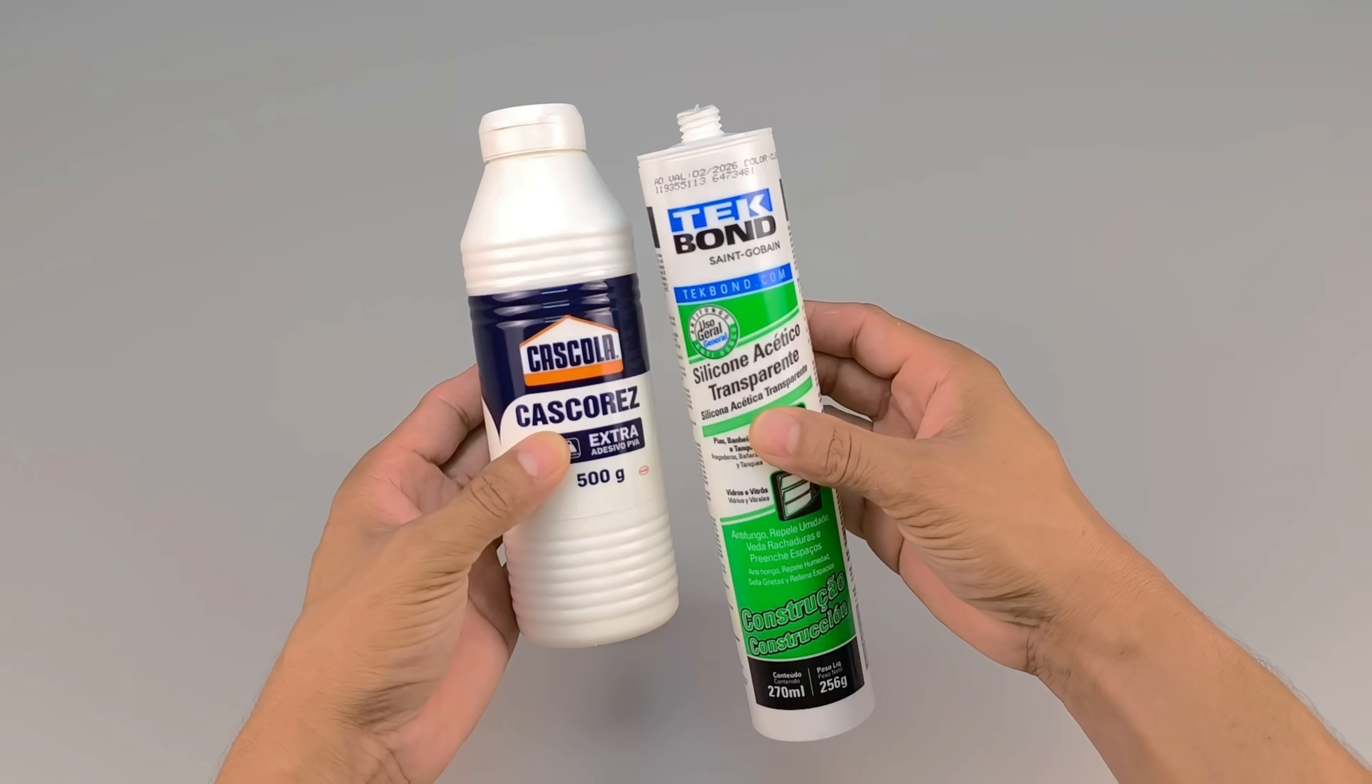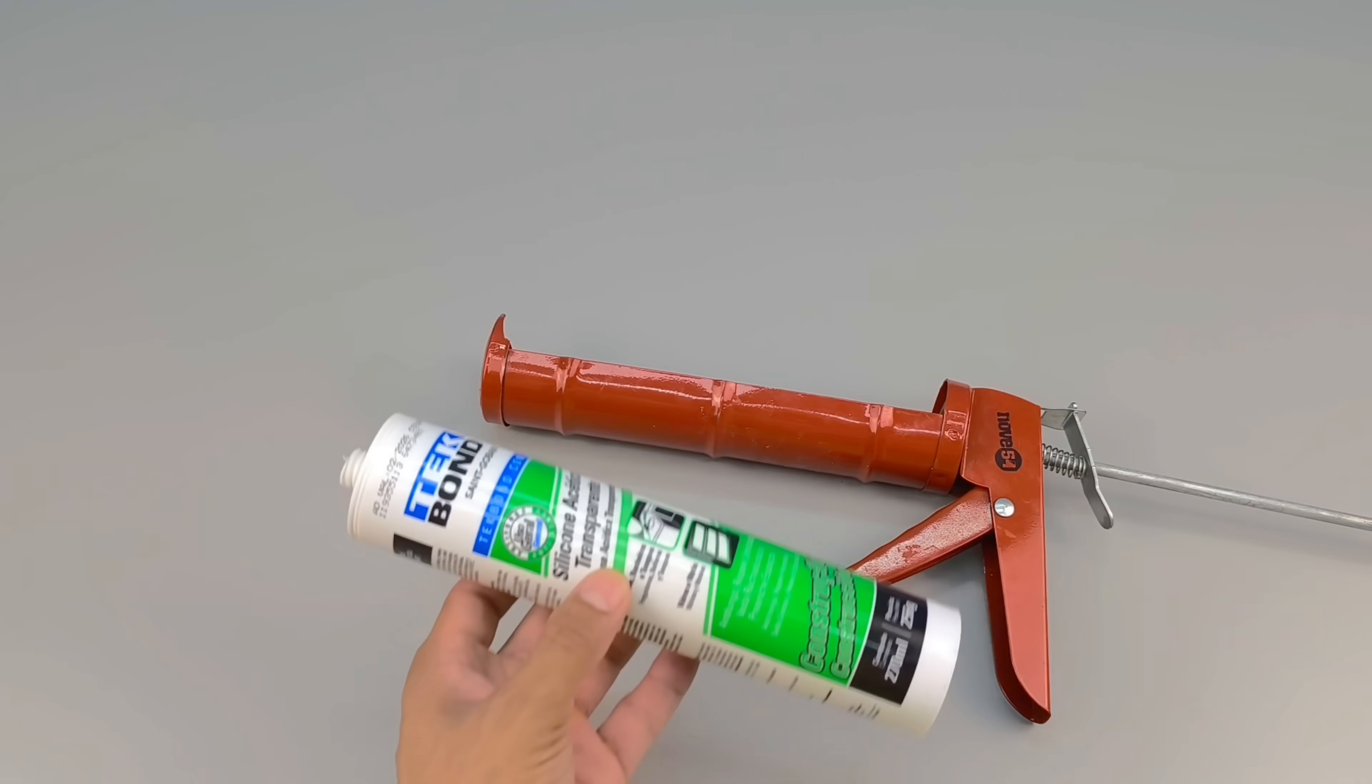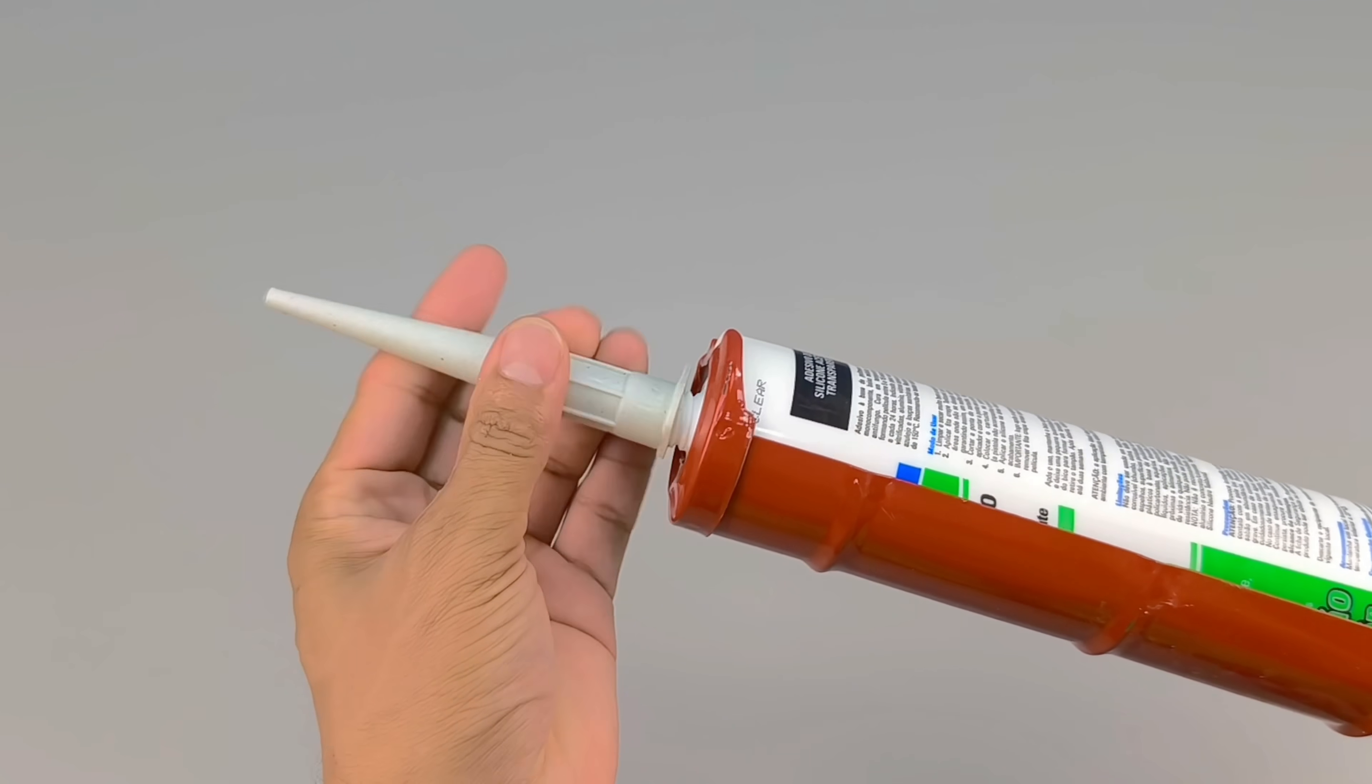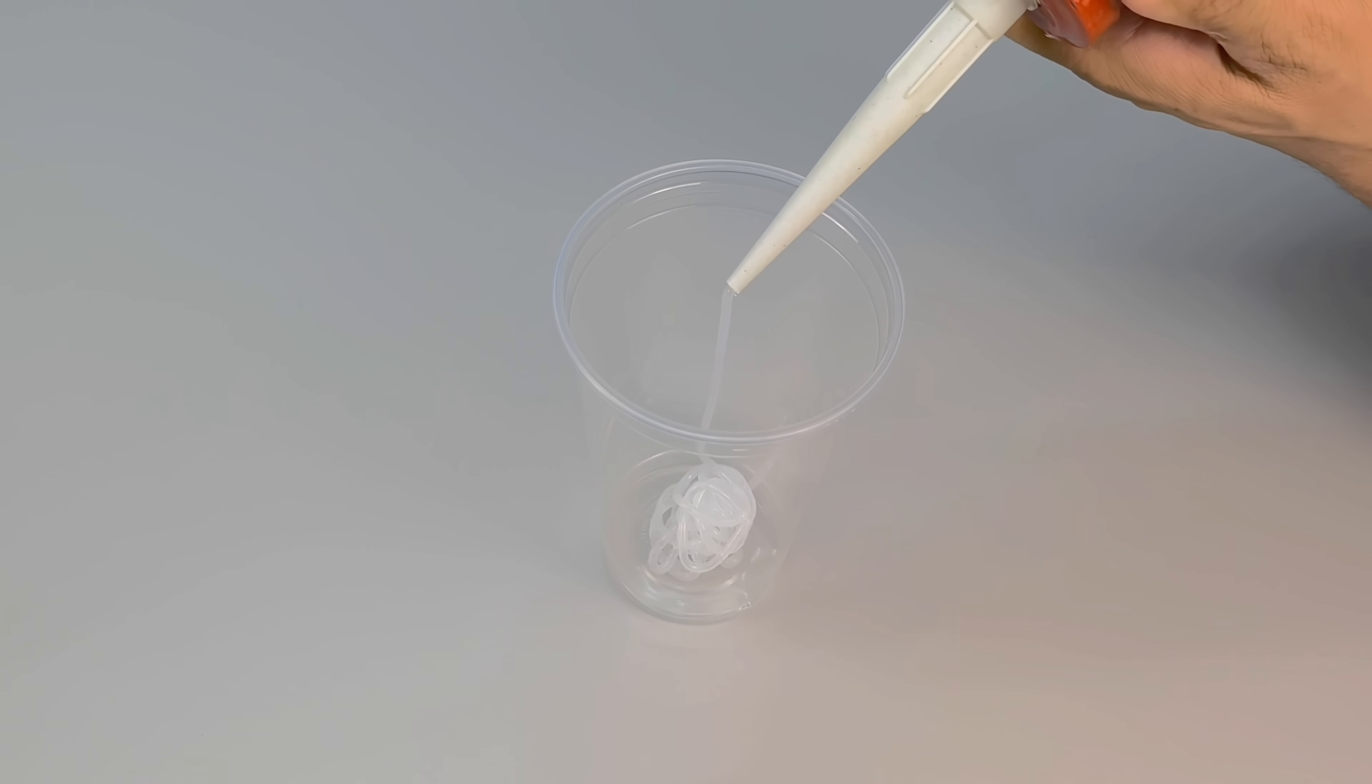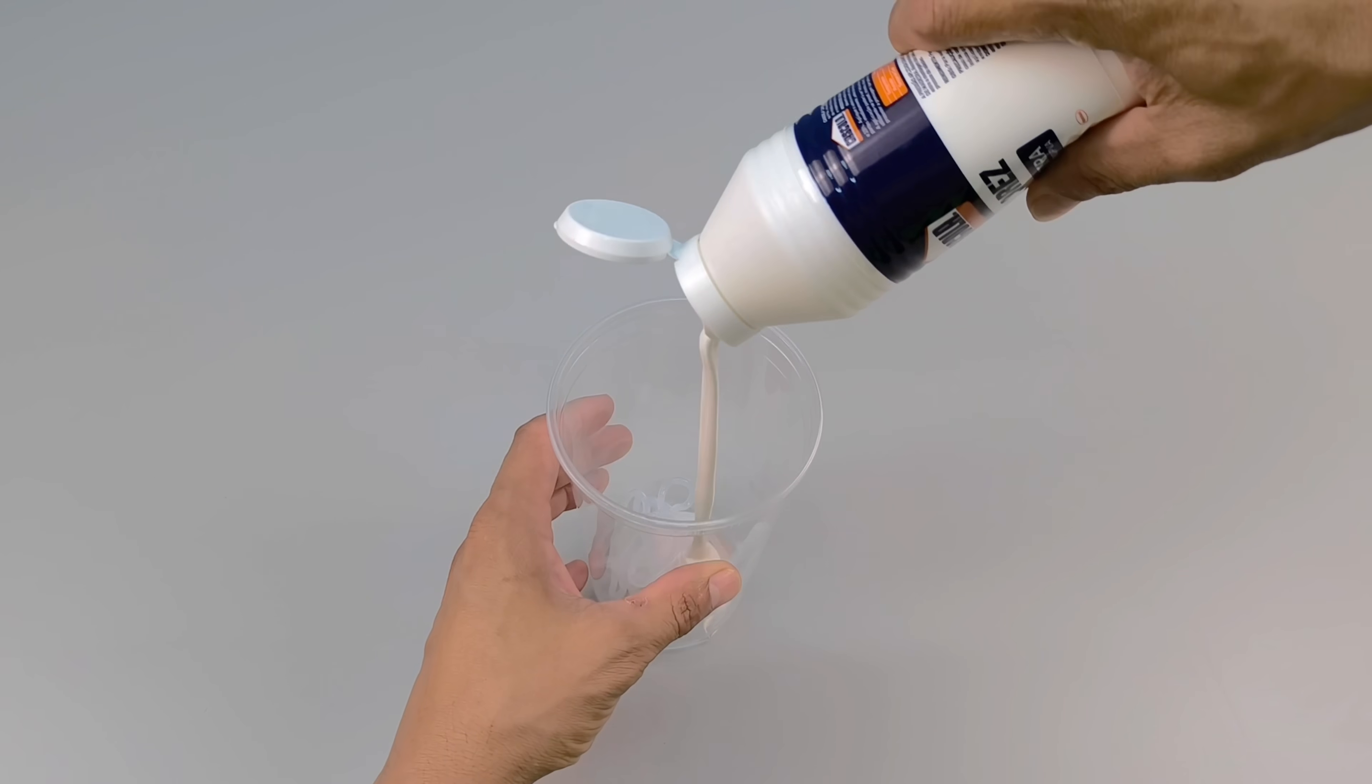Have you ever heard of a mixture that uses only white PVA glue and silicone, but which, with a few clever tricks, can be transformed into something extremely useful and durable? Today, I'll show you how to make this combination and further enhance its properties, creating a product that can surprise you with its strength and versatility. To begin, I grab a simple container. I'm using a disposable cup, but any sturdy container will work. I pour a generous amount of silicone into it, the same kind used for sealing gaps, which is both durable and elastic. Next, I pour in the same proportion of white PVA glue, known for its adhesion and versatility.